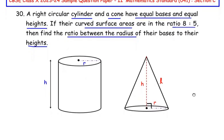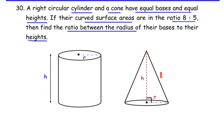Here I have drawn a right circular cylinder and a right circular cone. They both have equal bases, which means the radius of the base of the cylinder is exactly equal to the radius of the base of the cone, so I have used r for both. Similarly, the heights are the same, so I have used h for both. There is an additional letter, small l, which stands for the slant height of the cone — h is the perpendicular height and l is the slant height, which is inclined with respect to the base.